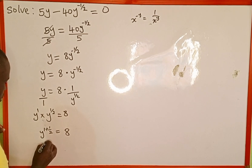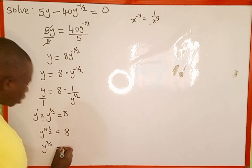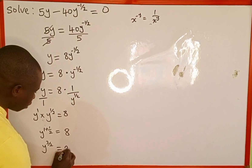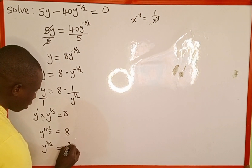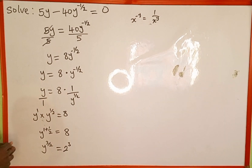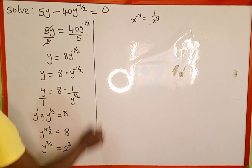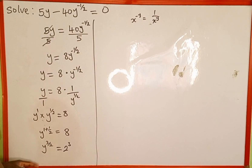So y raised to 3 over 2 is equal to 8, and this 8 can also be written as 2 to the power of 3, because when you multiply 2 by itself 3 times it gives us back 8.